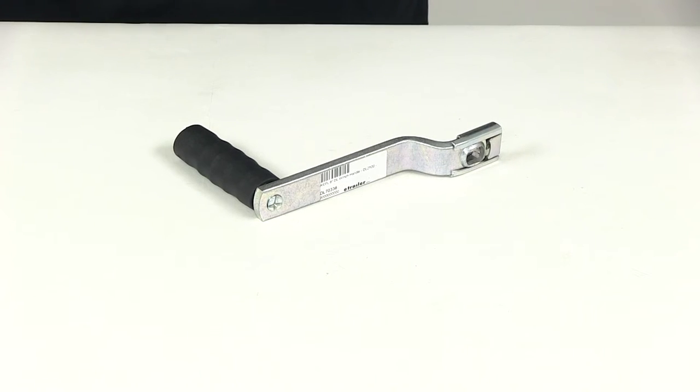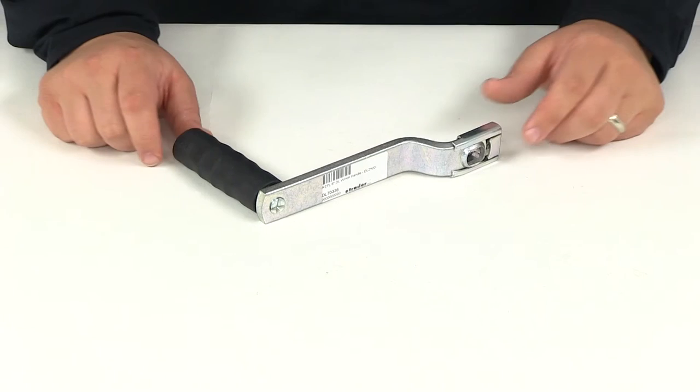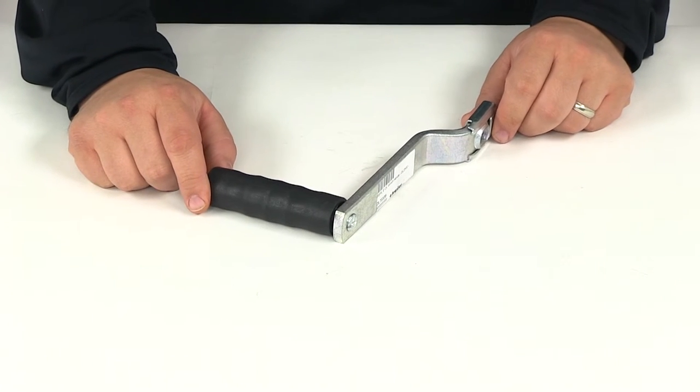Today we're going to be taking a look at part number DL70336. This is the Dutton-Lanson replacement winch handle for the Dutton-Lanson winch.